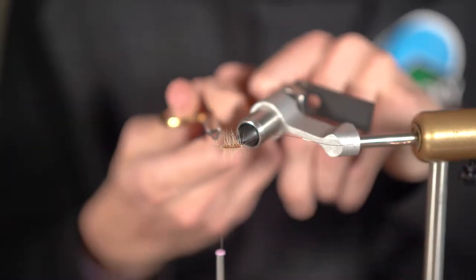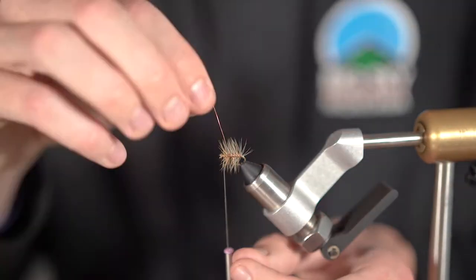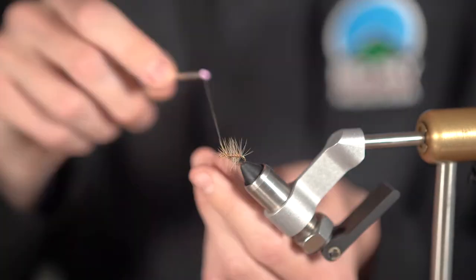Now carefully grab the hackle and wrap that up the shank of the hook in the opposite way you wrapped up the dubbing. Tie that in, snip off the excess, and do the exact same thing with the copper wire.